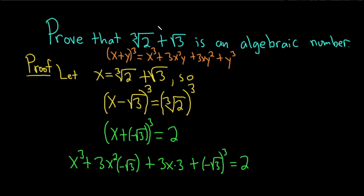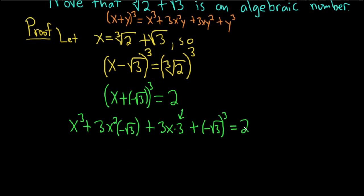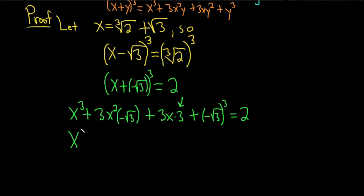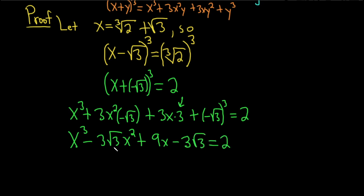Let's double check: we have x cubed, 3x squared y where y is negative root 3, then 3x times y squared — y is negative root 3, so when you square it the square root goes away and you get 3. Then plus y cubed, which is negative root 3 cubed. Simplifying, we get x cubed minus 3 root 3 · x squared plus 9x minus 3 root 3, and that equals 2.